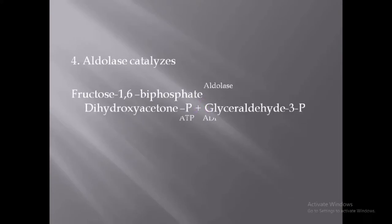In the fourth step, fructose-1,6-bisphosphate is converted to dihydroxyacetone phosphate and glyceraldehyde-3-phosphate with the help of the enzyme aldolase, which is a tetramer. There are two isoenzymes: aldolase A, which occurs in most tissues, and aldolase B, which occurs in the liver and kidney.